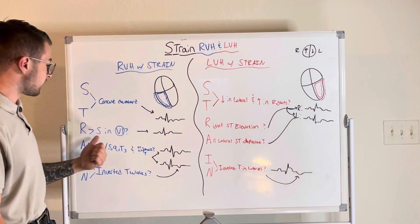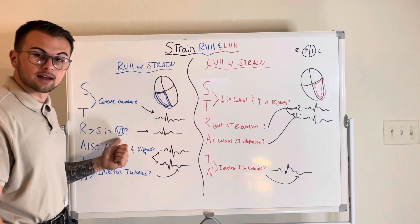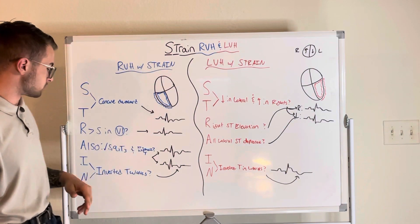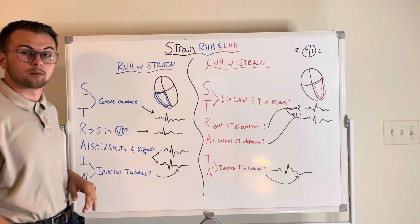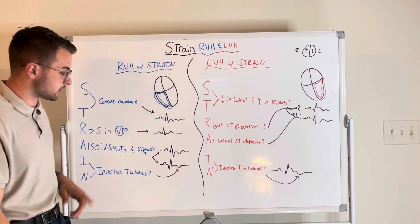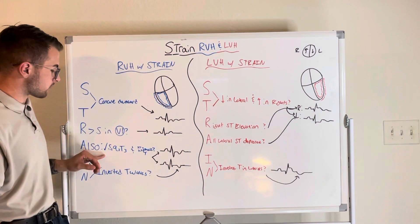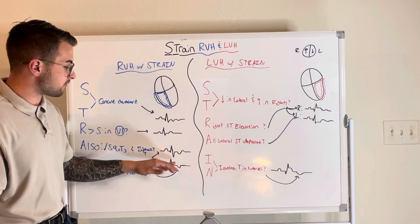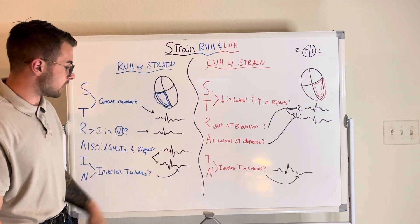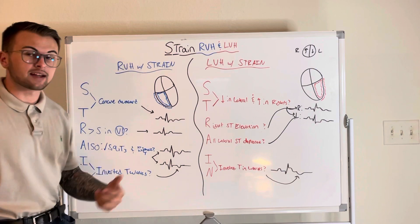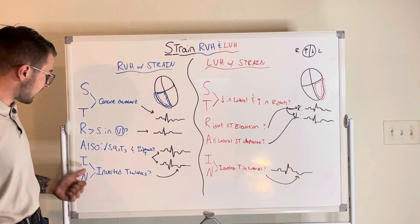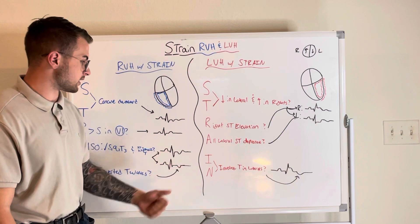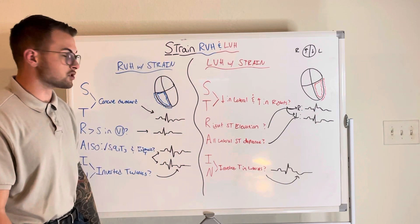An RS ratio greater than one in lead V1 will indicate right ventricular hypertrophy. Additionally, we need to check for an S1, Q3, T3 pattern or biphasic T waves as shown here — that can indicate strain. And then the IN stands for inverted T waves as we can see here.